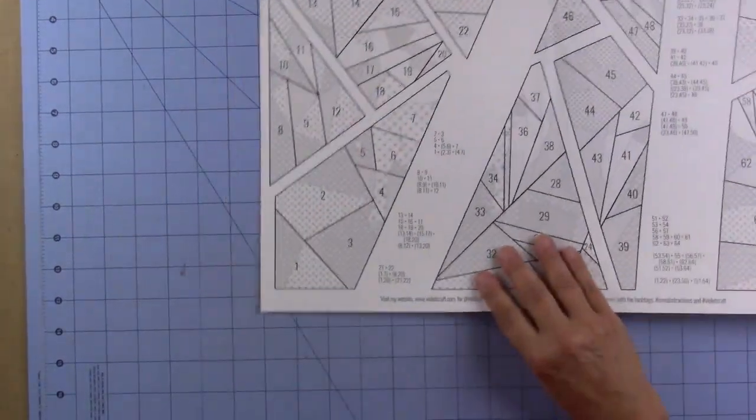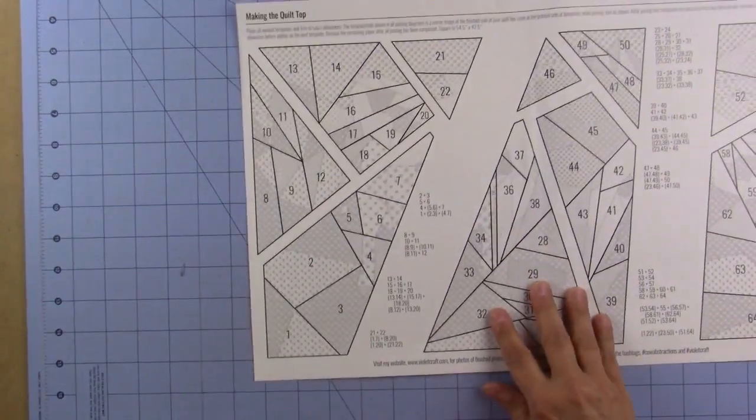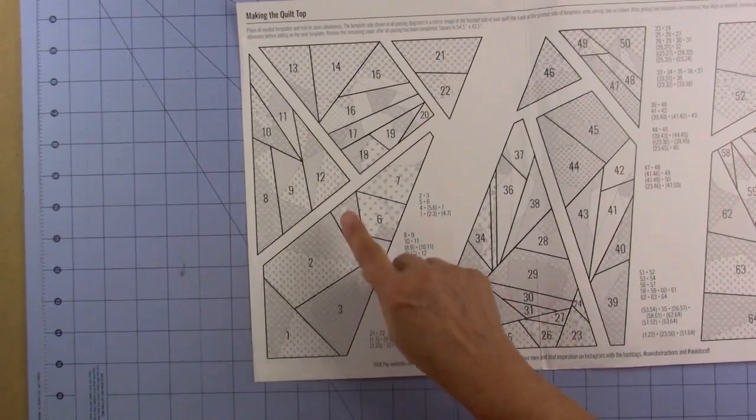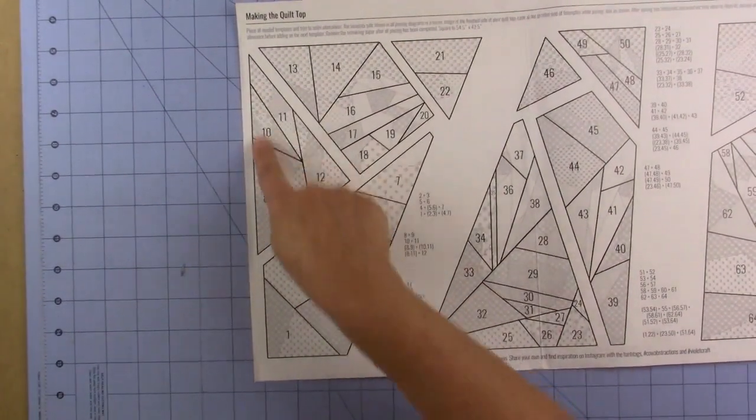Again, that is just one through seven here. I've also done the next one, which is eight through twelve in this big triangle.